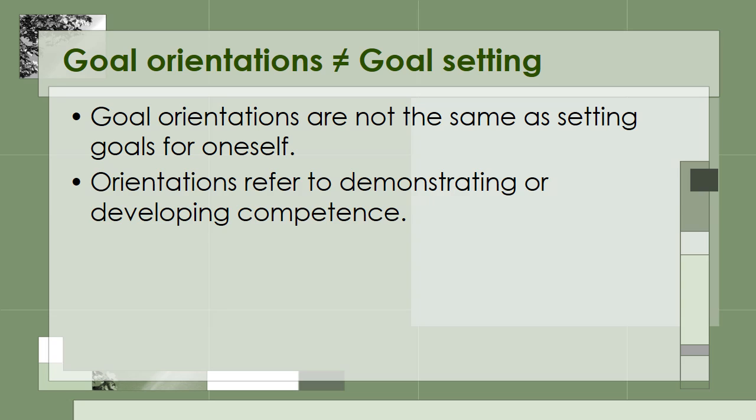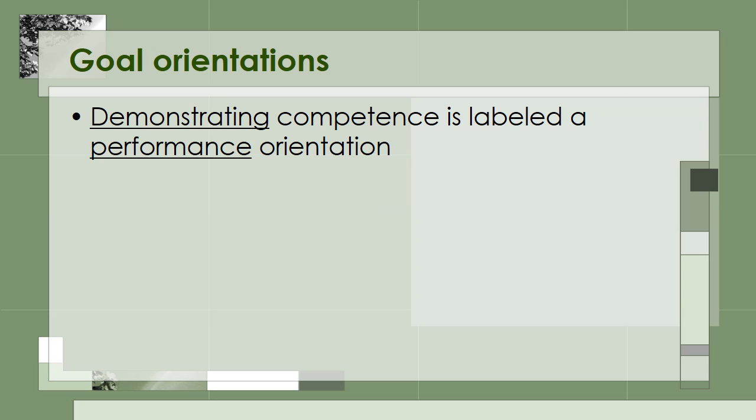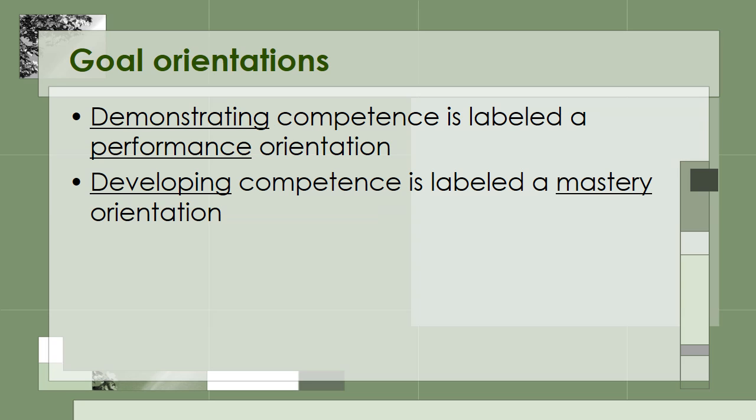Rather, goal orientations refer to demonstrating or developing competence. These two orientations have been labeled performance and mastery orientations, where demonstrating competence is labeled a performance orientation, and developing competence is labeled a mastery orientation. This is one basic definition in goal orientation theory, and we can organize this distinction graphically like this.